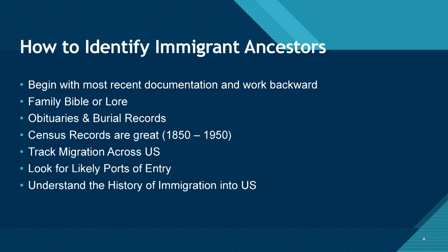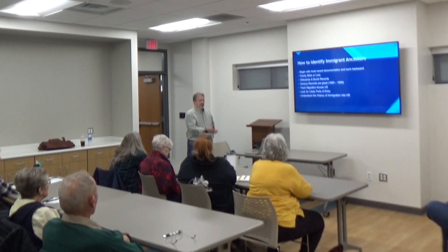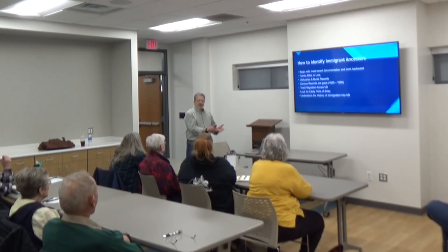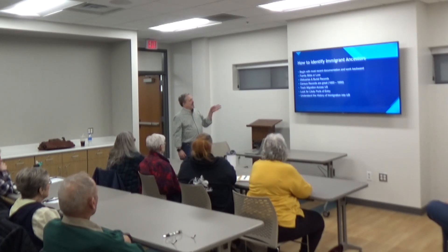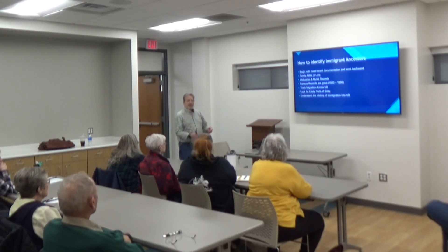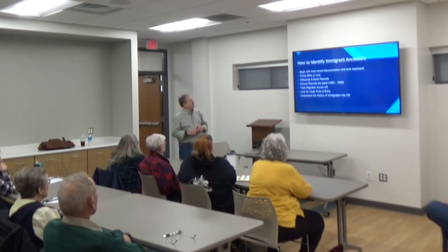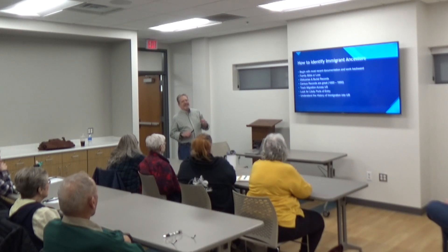You can track migration across the U.S. Sometimes they'll say they're going to locate at one place on their first immigration documents, then apply for naturalization in a different place, and when they actually become naturalized citizens they're in a completely different place yet. Sometimes they're migrating with the same people — neighbors and family members they came over with. So if you can't find your ancestor, maybe you can find the other people surrounding them. That's the FAN method — Friends, Acquaintances, and Neighbors.